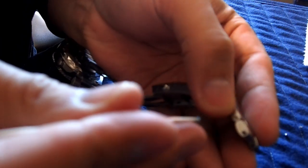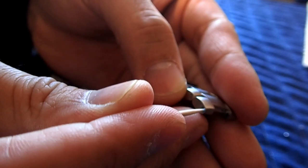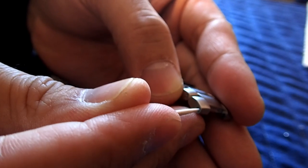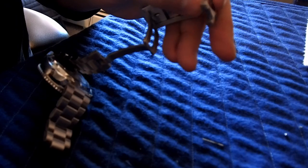Reapply the Loctite to your little hole here in the bracelet. Just around the threads. You don't need a lot of it. This stuff is pretty good. And just kind of get it in there.